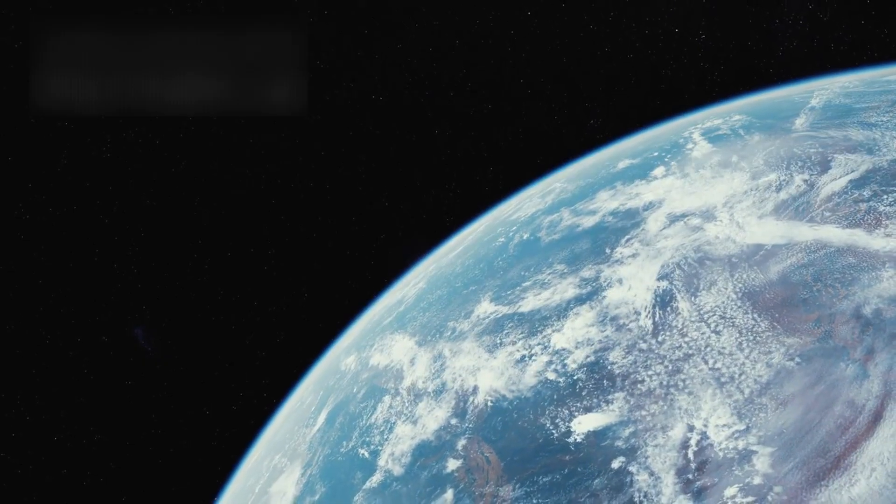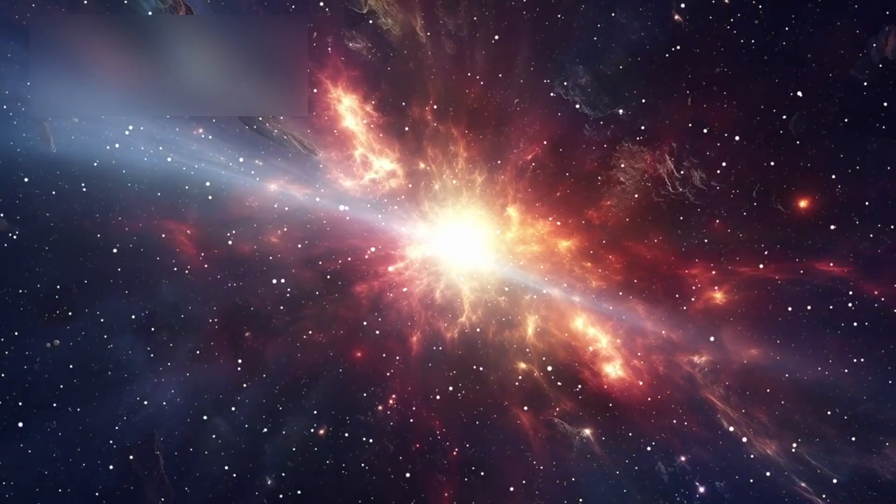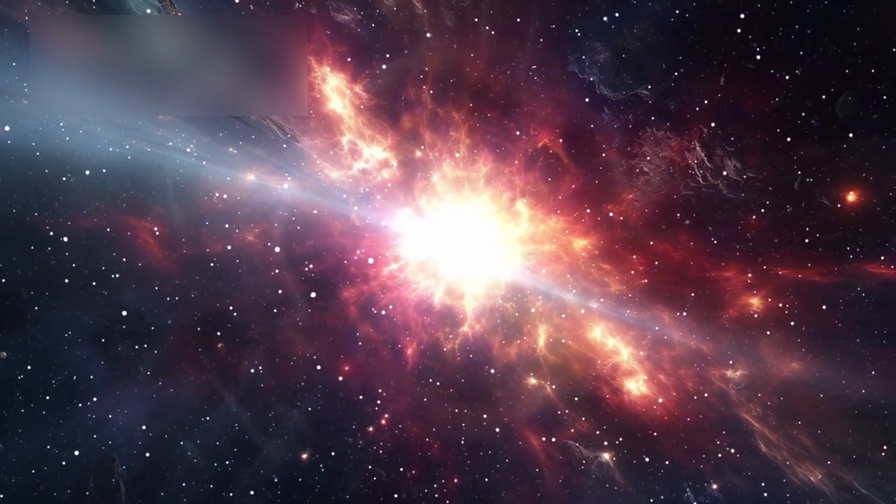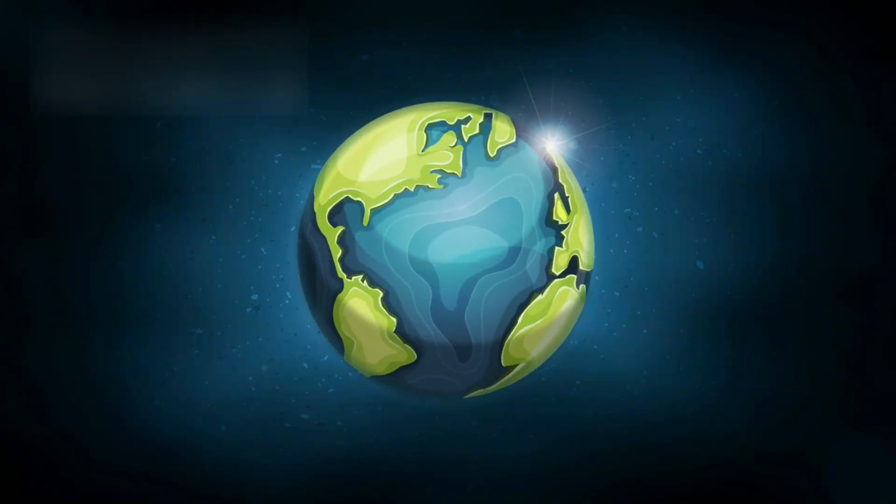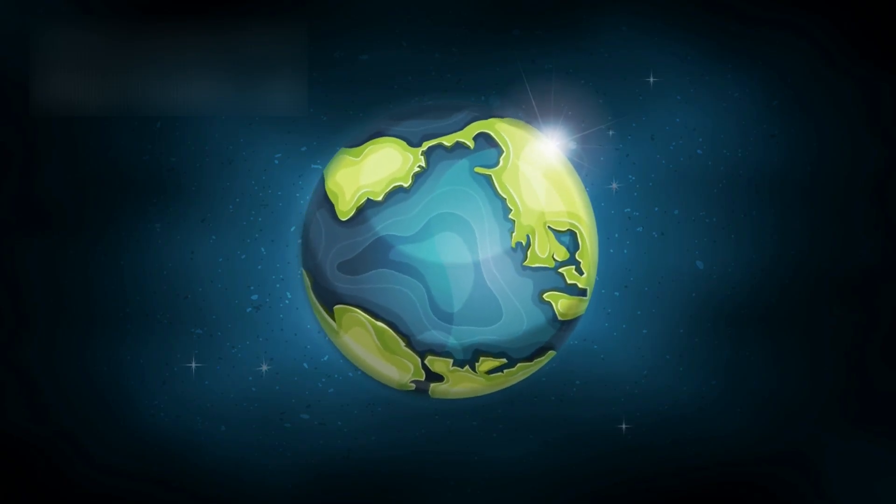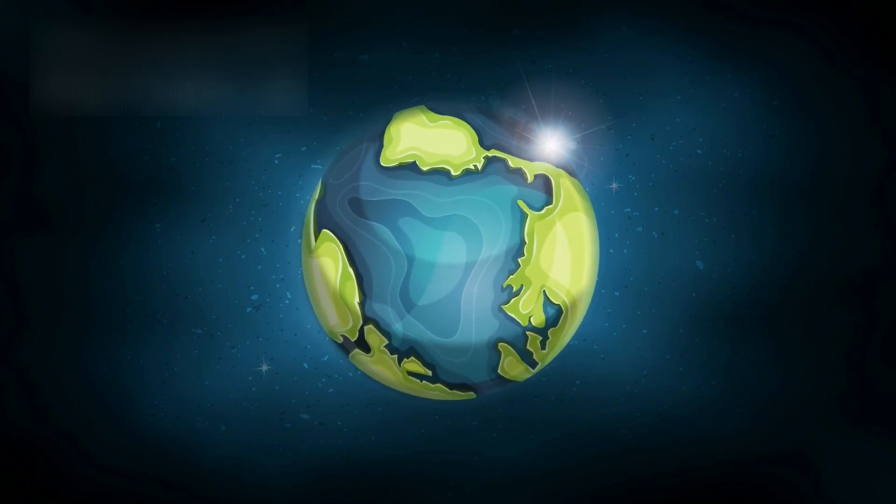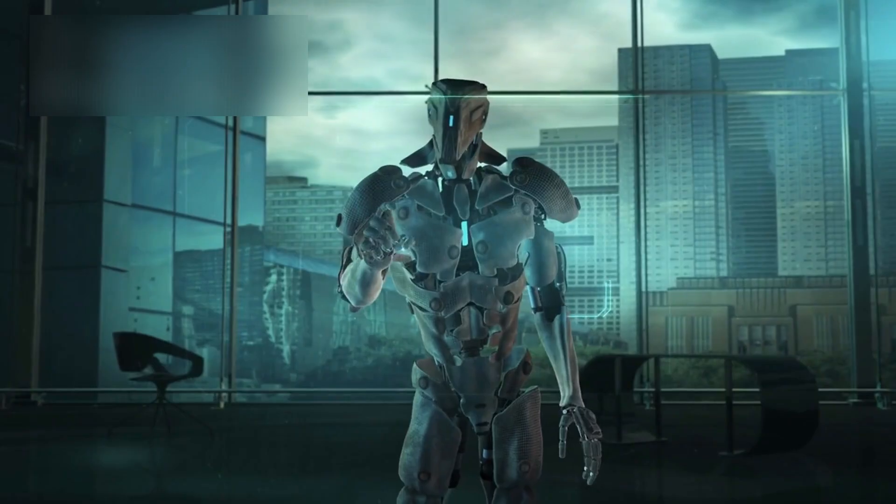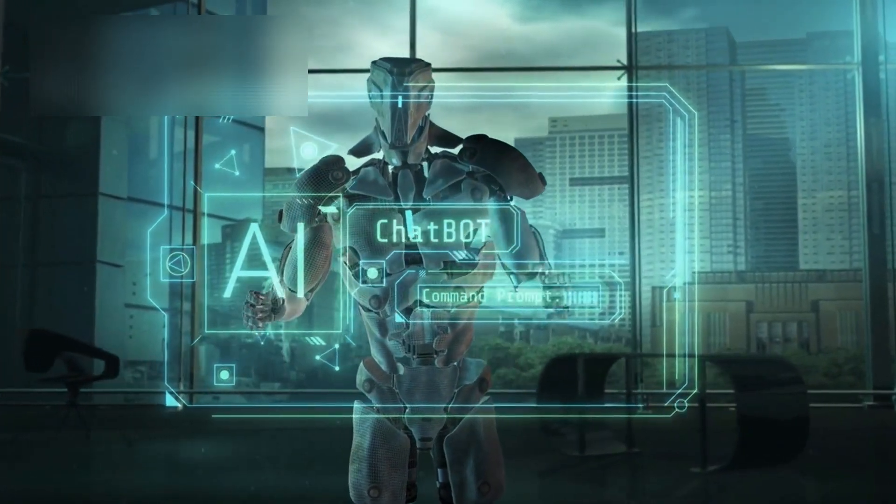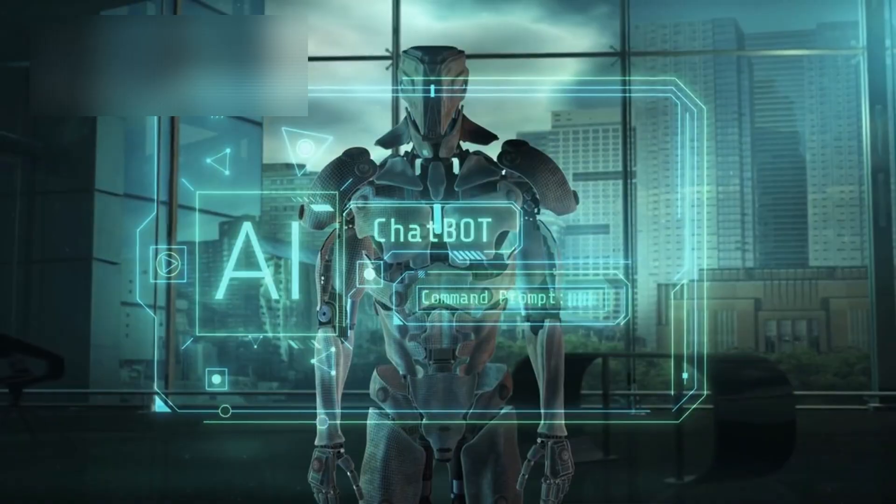And what about us, here on Earth? When Betelgeuse finally goes supernova, will its cosmic death pose a danger? The reassuring answer is no. At 600 light-years away, its radiation will have spread out over such a vast distance that by the time it reaches us, it will be harmless. This is thanks to the inverse square law of physics. Energy weakens with distance, and 600 light-years is more than enough to keep us safe.